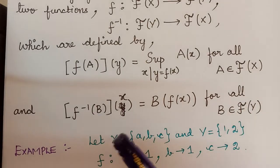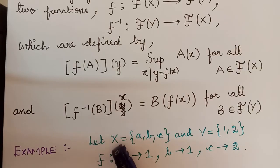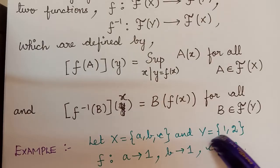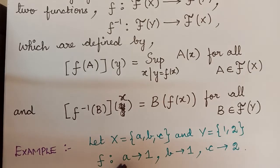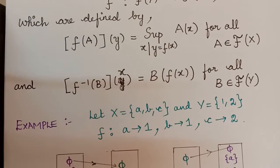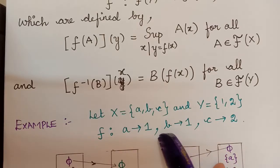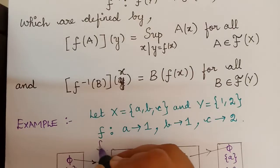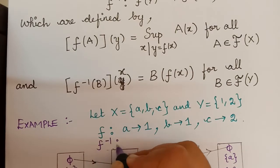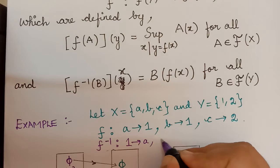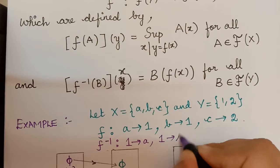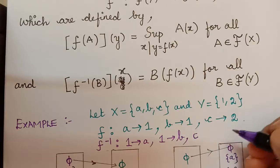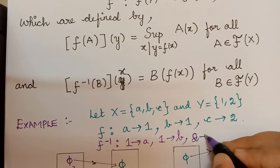Now here we have an example. We take the universal set X to be {A, B, C} and Y to be {1, 2}. We define a function where A is mapped to 1, B is mapped to 1, and C is mapped to 2. The inverse function f-inverse maps 1 to A, 1 to B, and 2 to C.